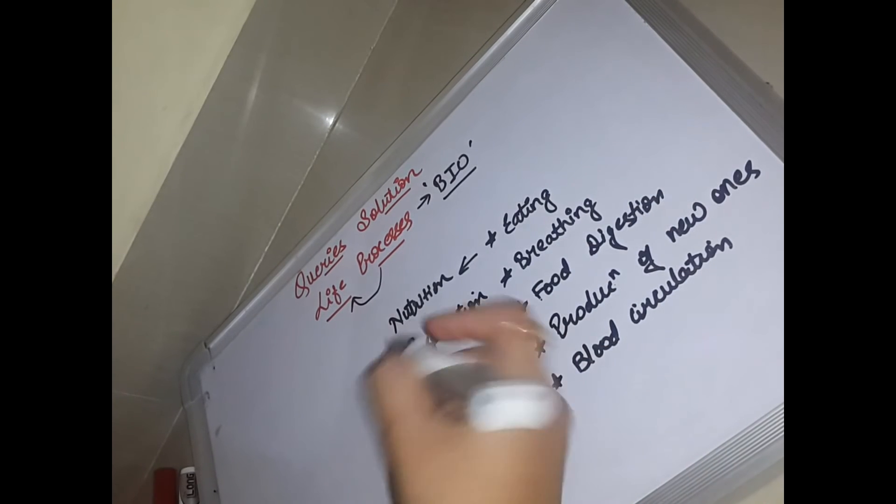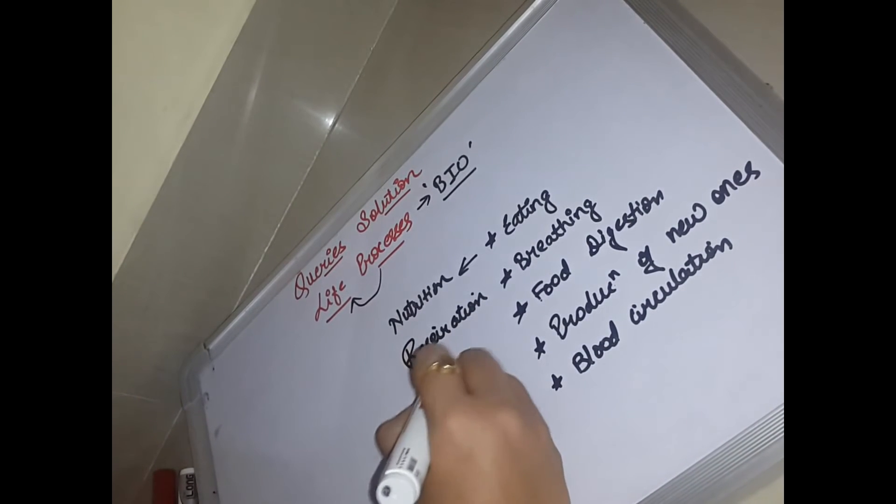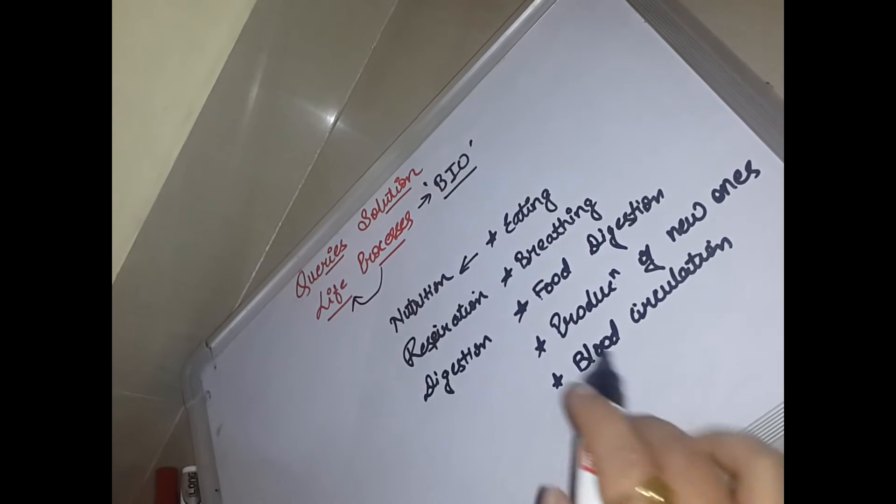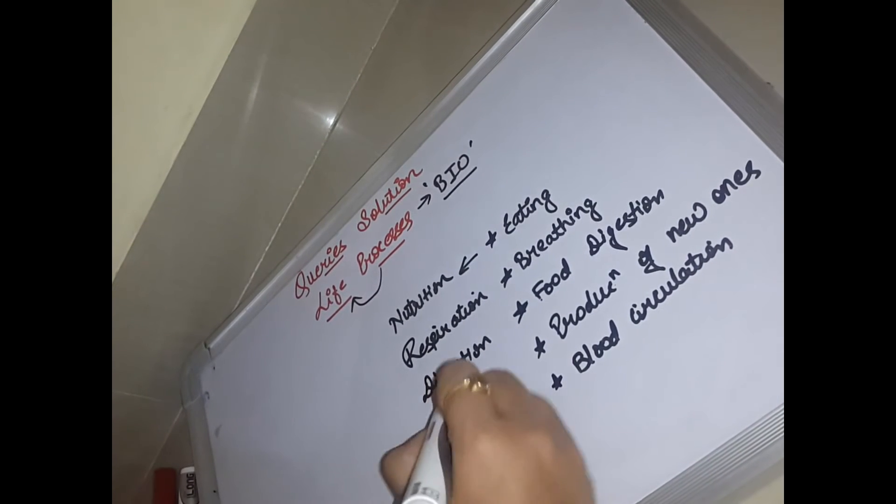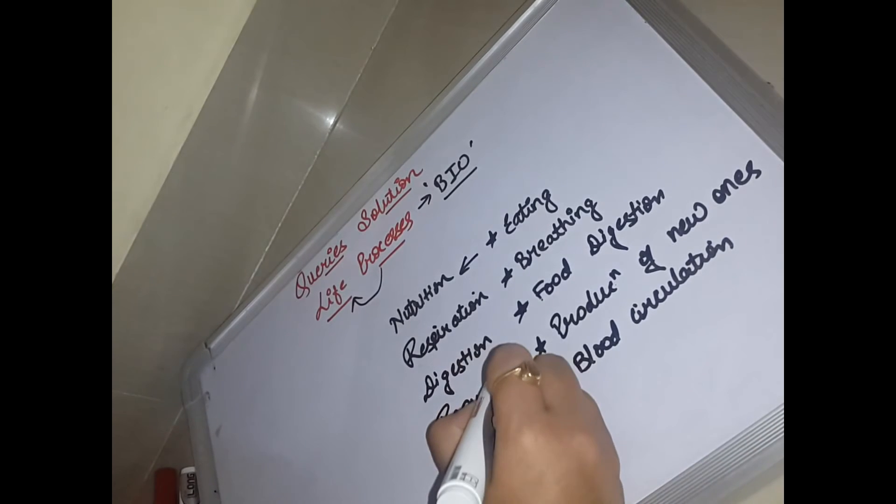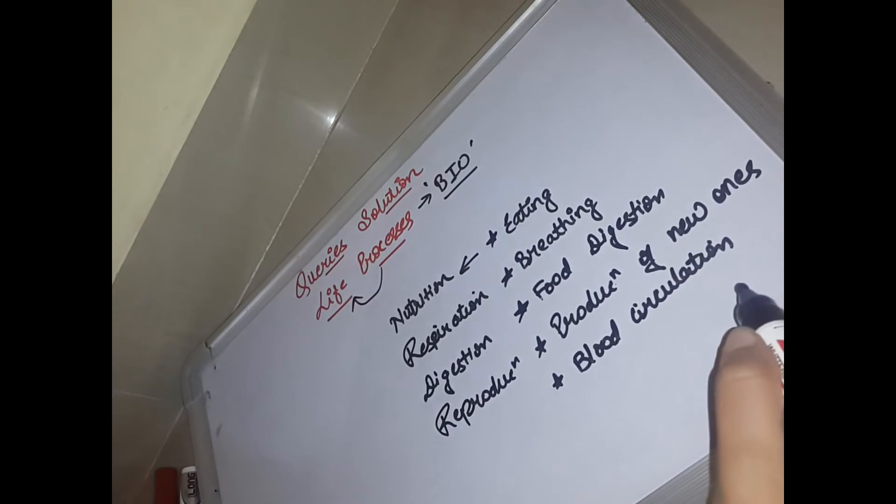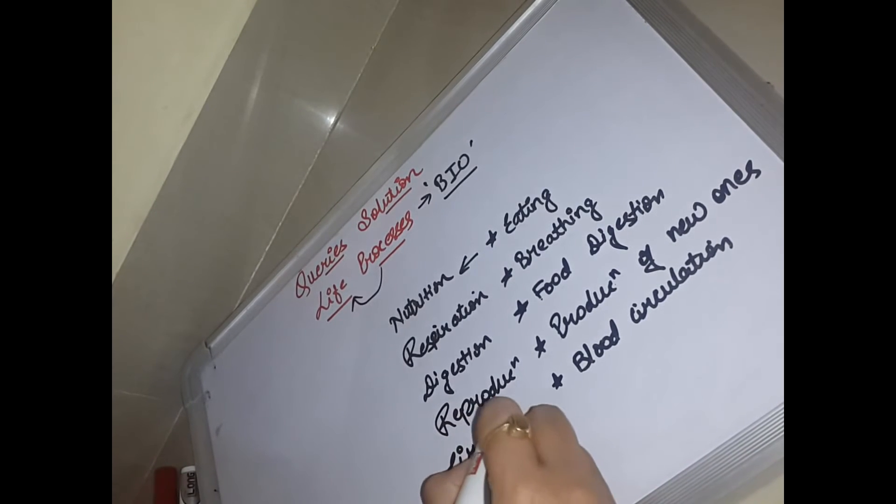The process of digestion of the food we all know is known as what? It is known as digestion. The process in which we produce the young ones is known as what? It is known as reproduction. And the process in which we circulate blood is known as what? It is known as circulation.